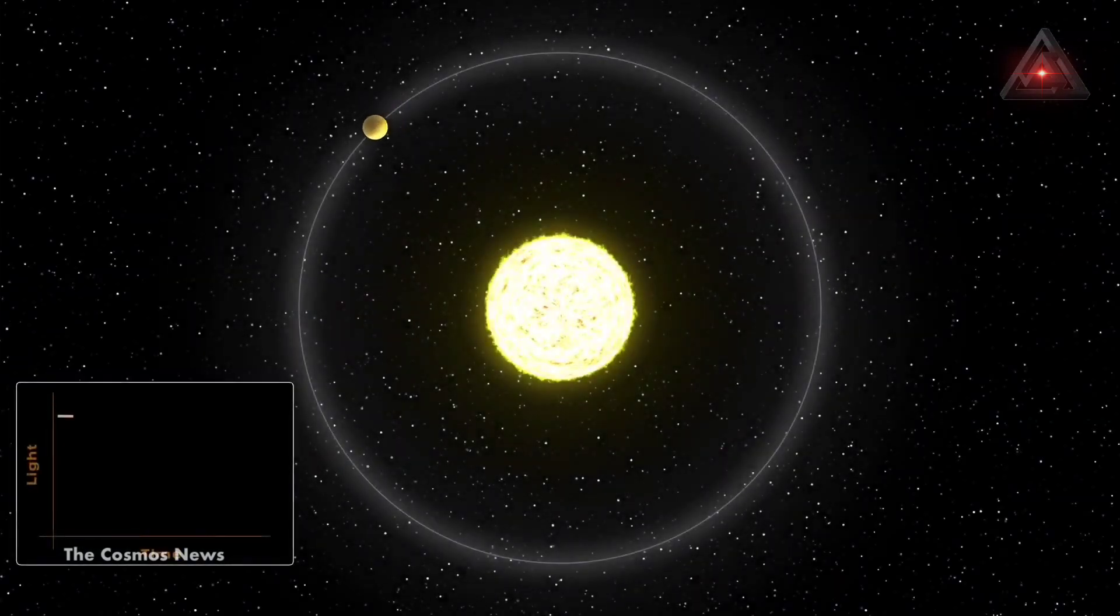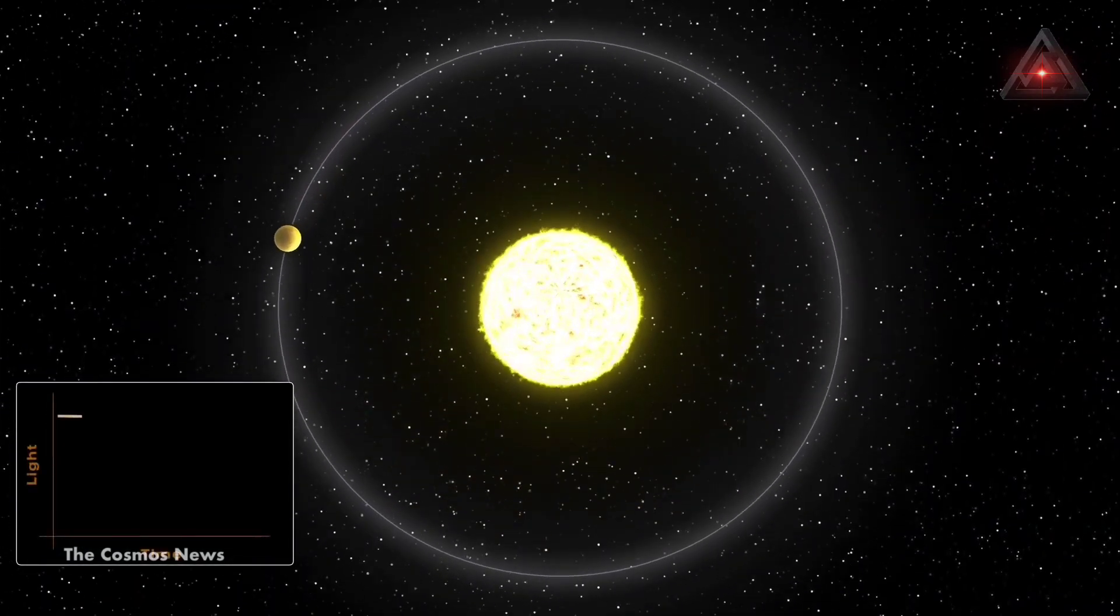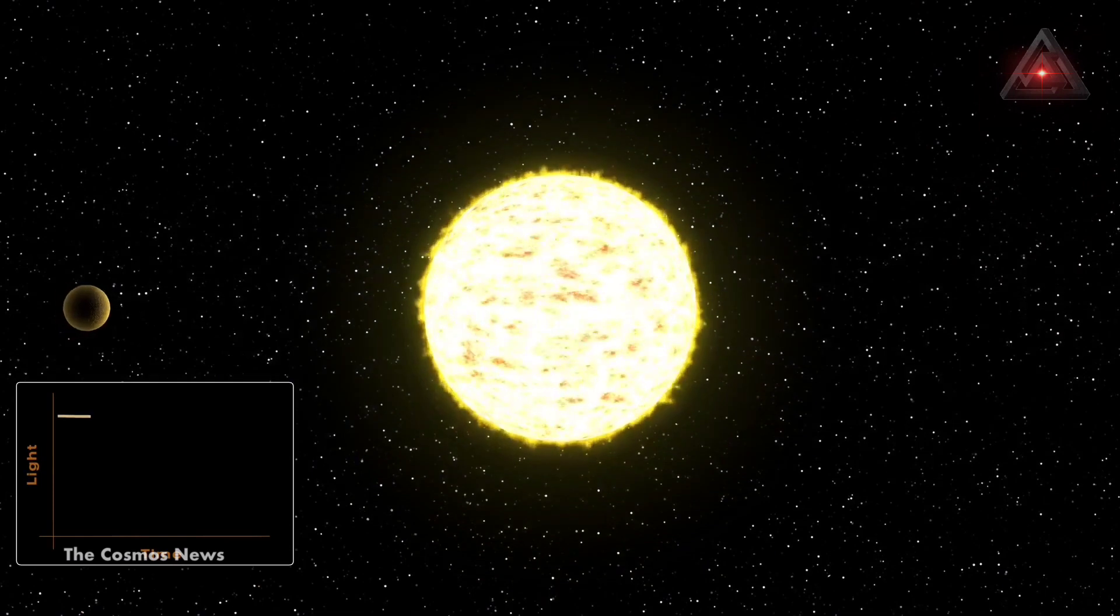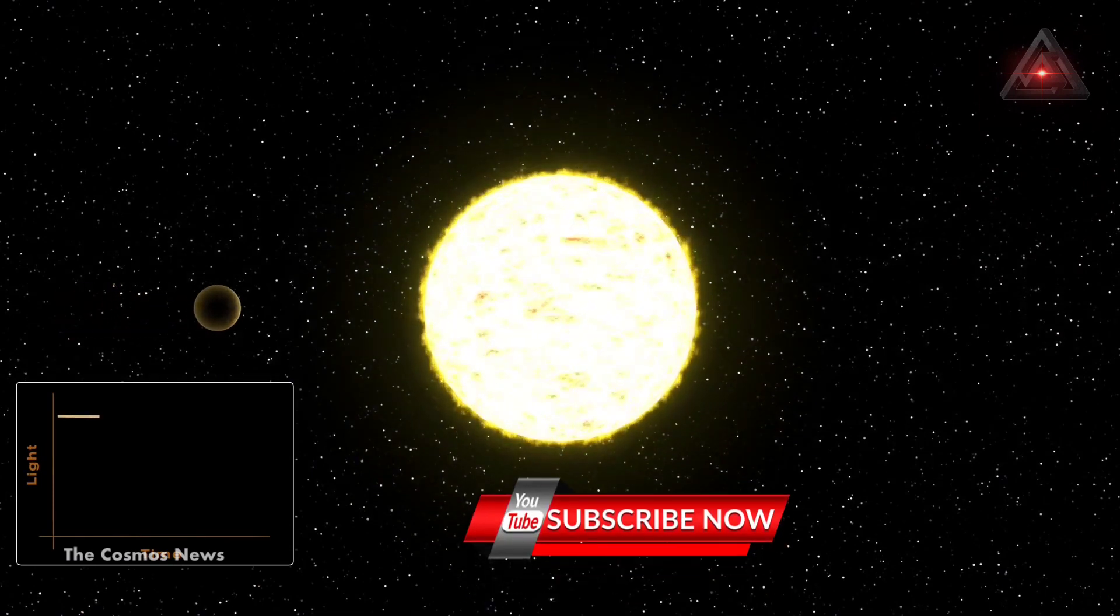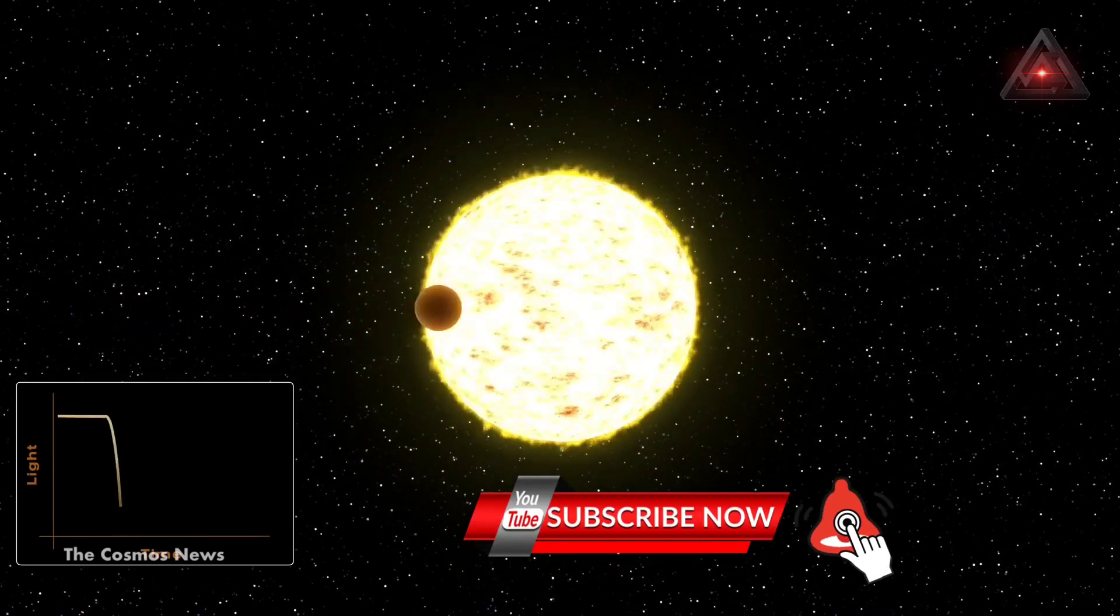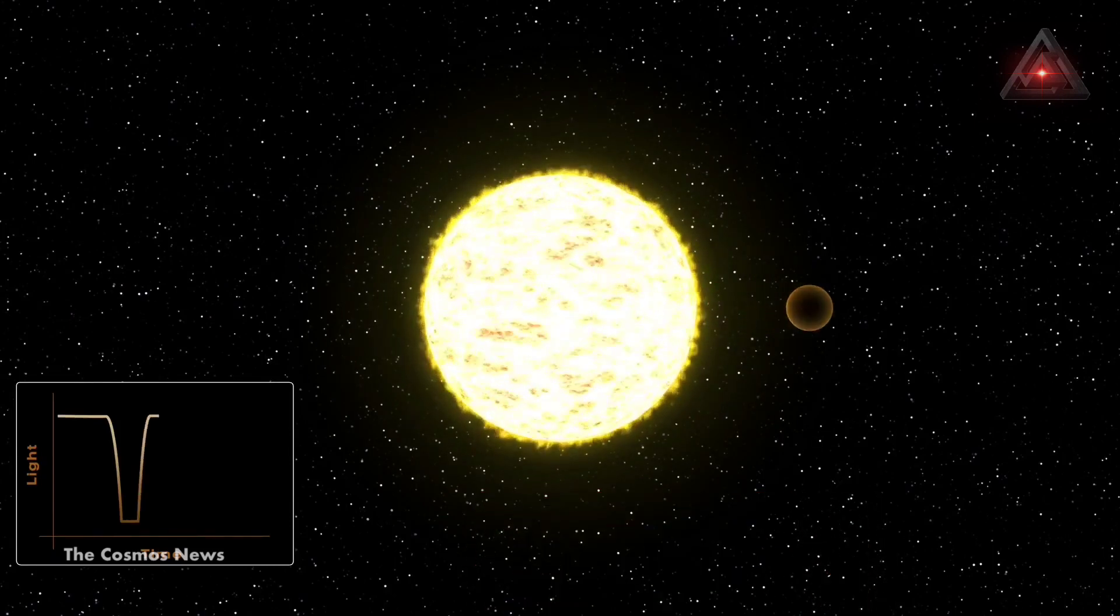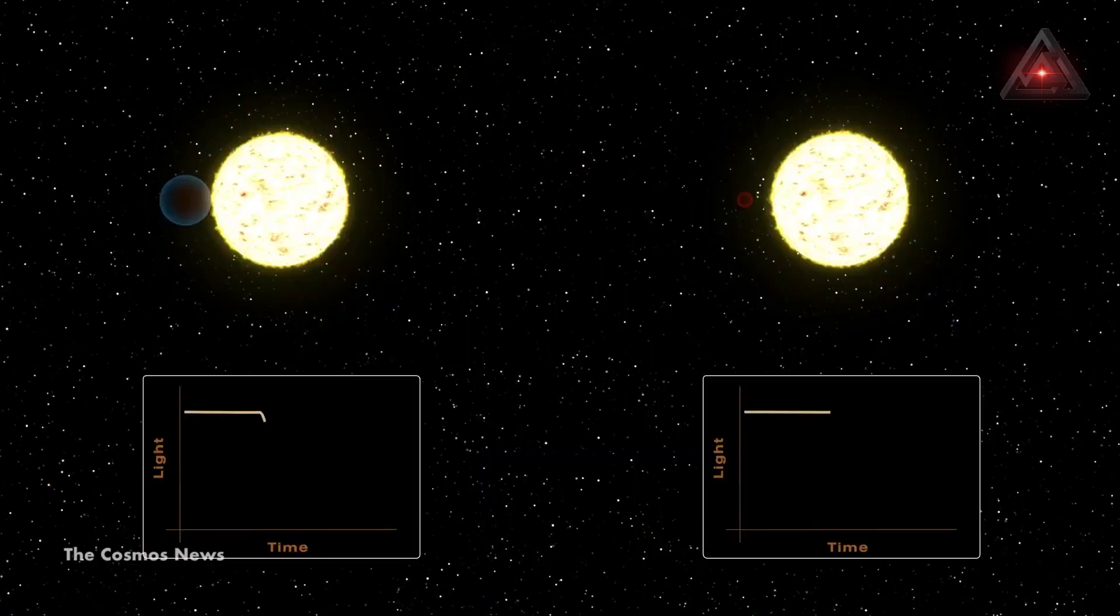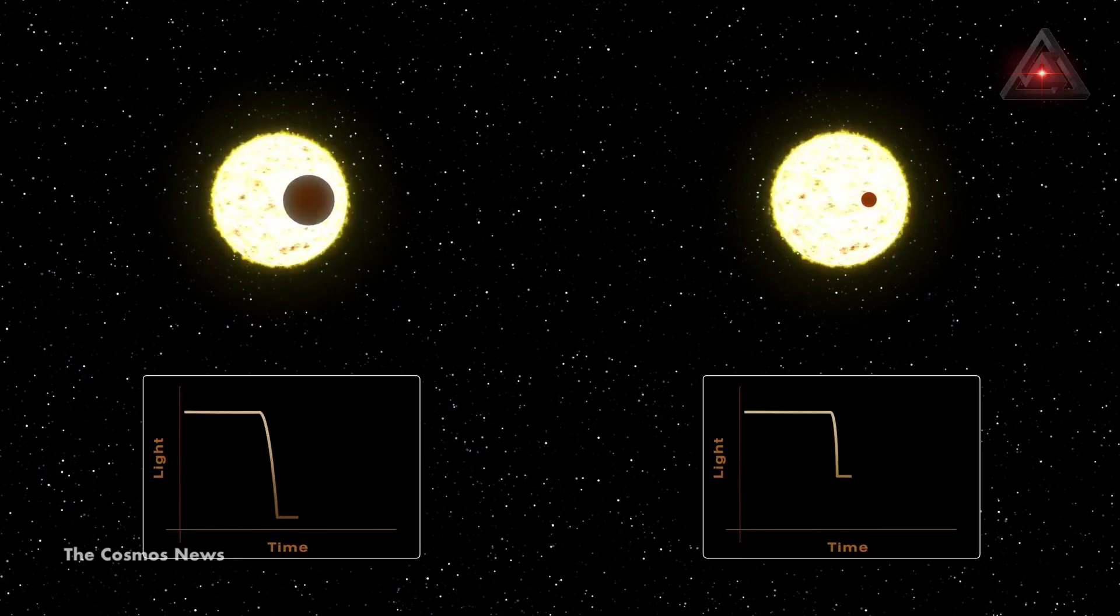If the star was a little closer or the planet a little bigger, scientists might have been able to spot TOI-700E in the first year of TESS data. But the signal was so faint that researchers needed an additional year of transit observations to identify it.